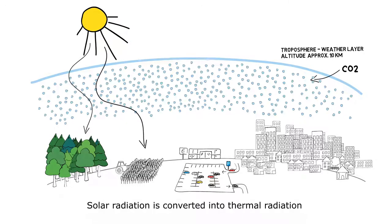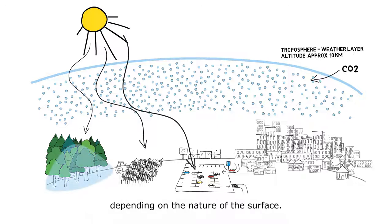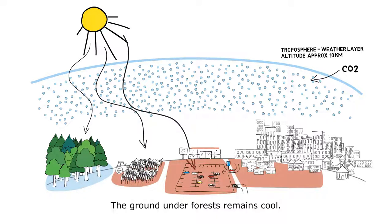Solar radiation is converted into thermal radiation, depending on the nature of the surface. The ground under forests remains cool.